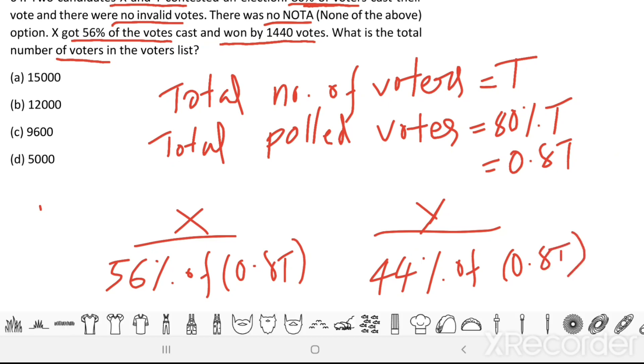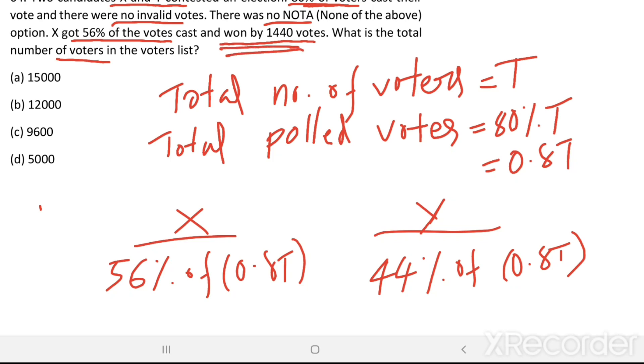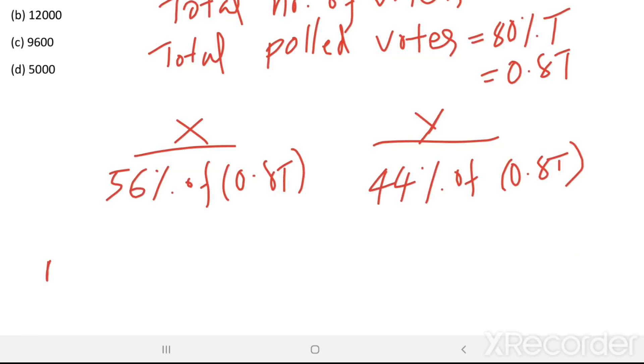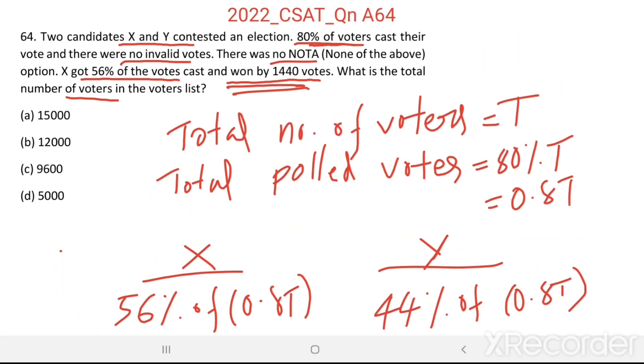Then, here it is said that X won by 1440 votes. That means majority. X got 1440 votes more than that of Y. That is called majority.